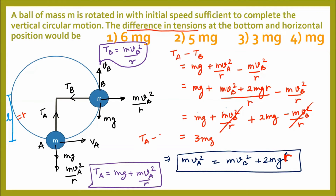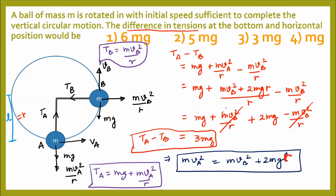So the difference in tensions T_A − T_B = 3mg. The tension at the bottom-most point is always greater than at any other point. The correct option is option 3.